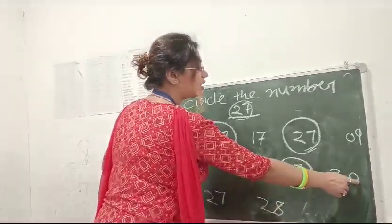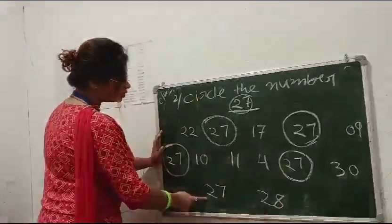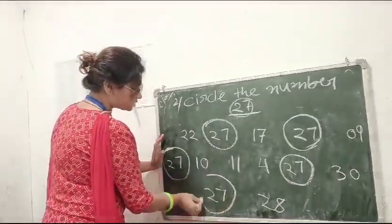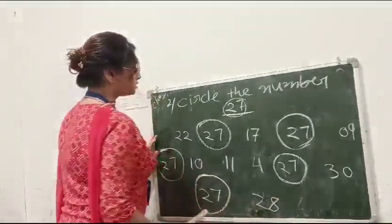Then, 30, 13. No. 27, 27. So, circle. Then, 28, 28.